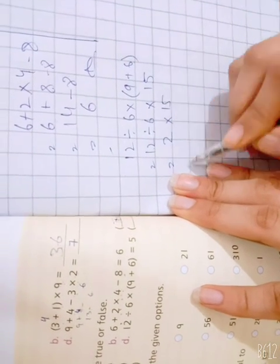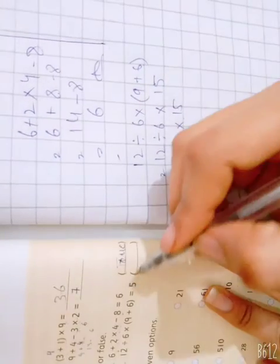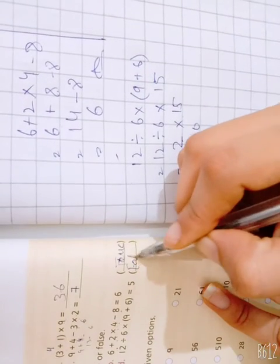We will multiply 2 by 15. 15 times 2 is 30. So what is our statement? False.